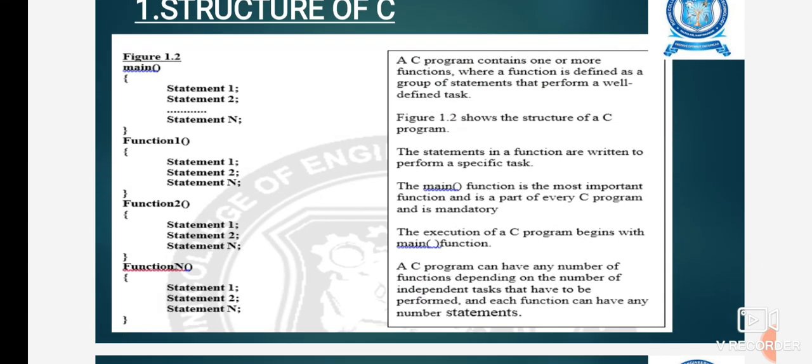A C program contains one or more functions, where a function is defined as a group of statements that perform a well-defined task. The statements in a function are written to perform a specific task. The main function is the most important function and is part of every C program. The execution of a C program begins with main function.